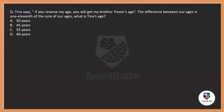Here is a question from the concept of ages. Tina says: if you reverse my age, you will get my brother Trevor's age. The difference between our ages is one-eleventh of the sum of our ages. So if you reverse her age, you will get the brother's age.